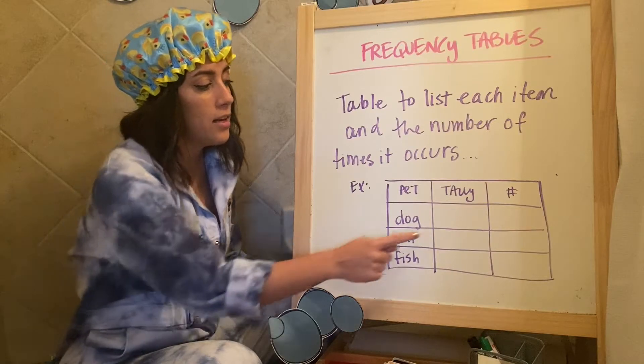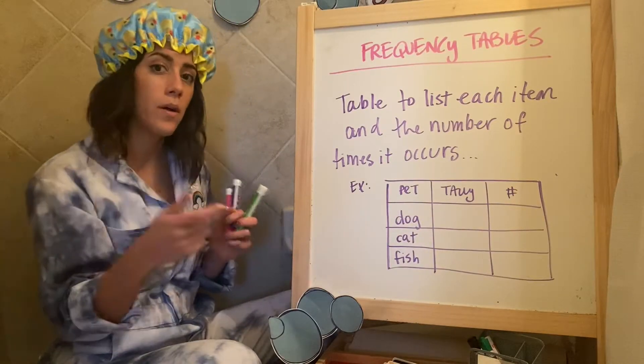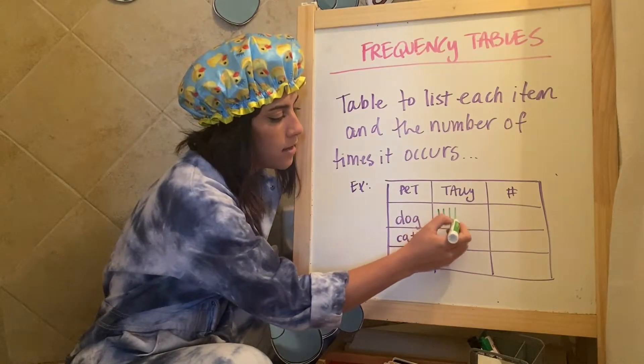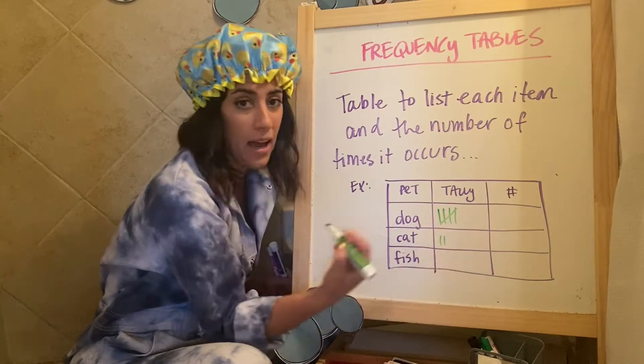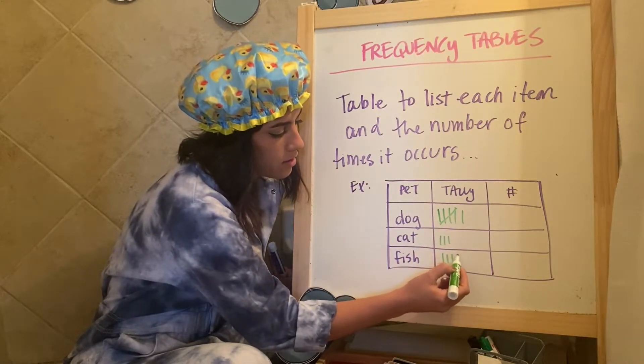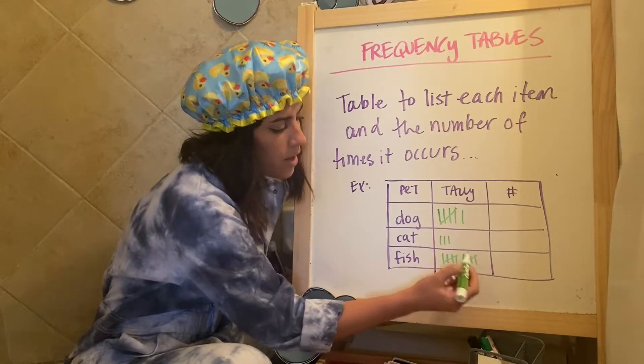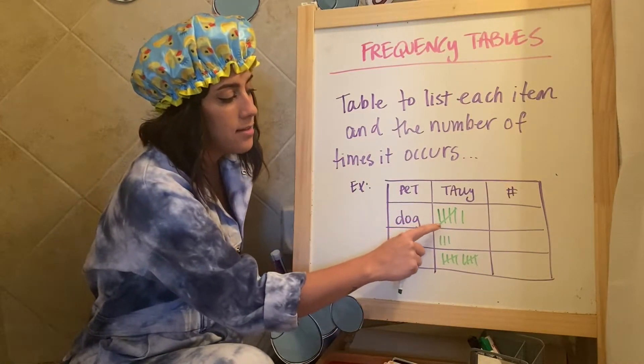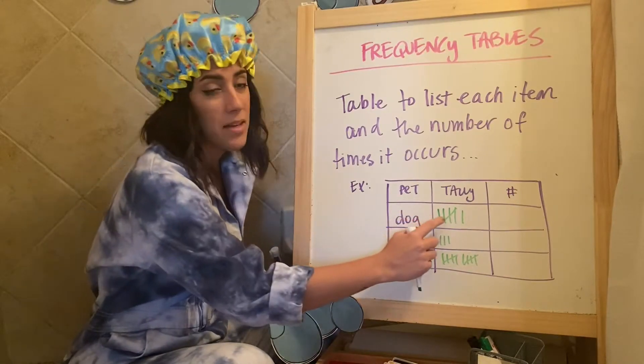And then I would tally up. So I would go around, what do you have a dog? What do you have a cat? I would make tallies of whenever somebody said they had something. So let's just say for example sake, I went around for about 10, 15 minutes.